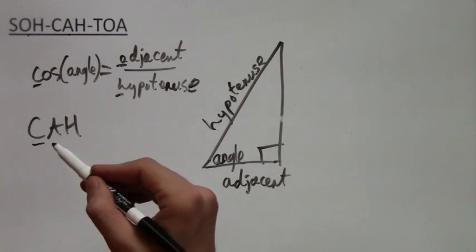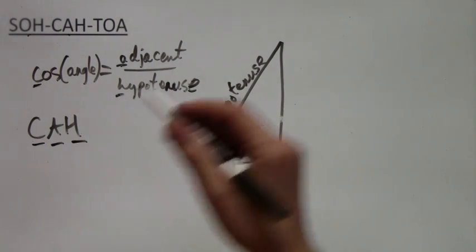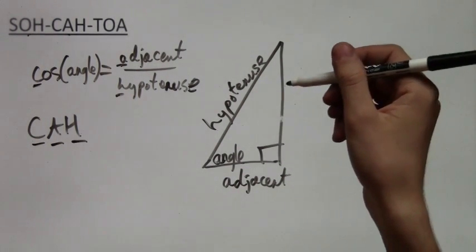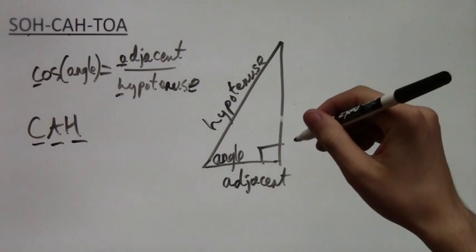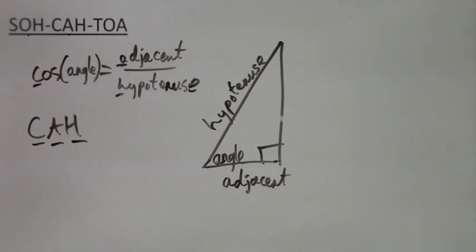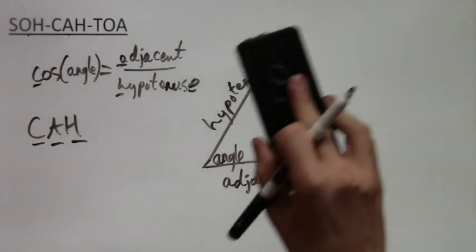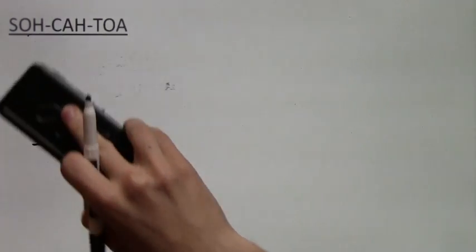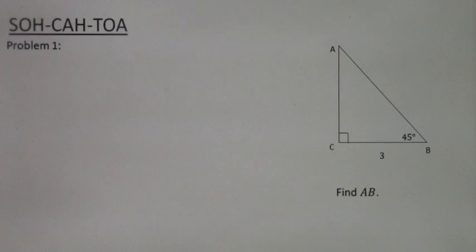Cosine, like sine, is just a special function. It's a button on your calculator similar to a square root or a square. And you can just take the cosine of any number, any angle, and it will give you a value. Alright, so now let's do some examples.